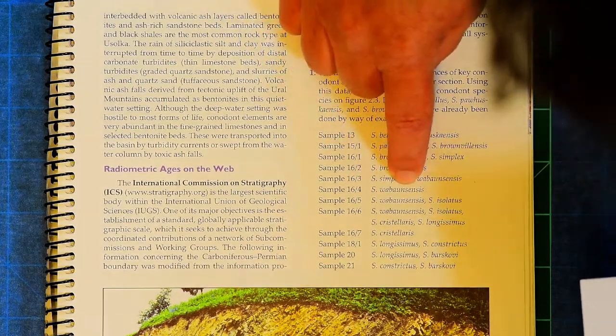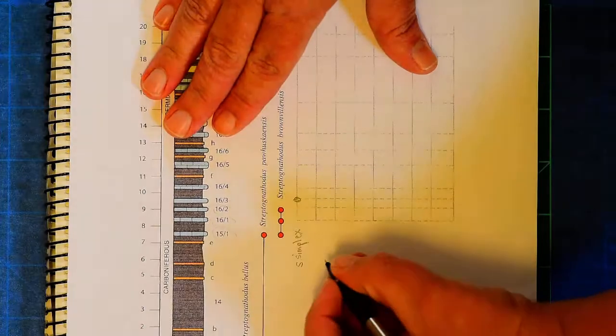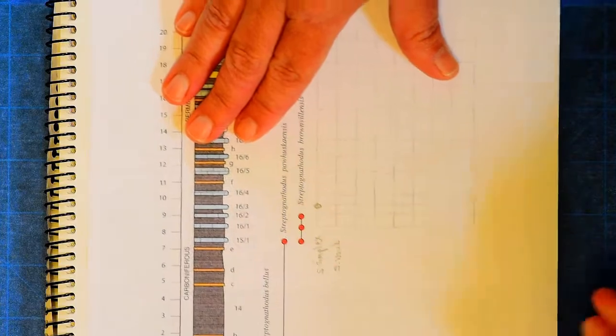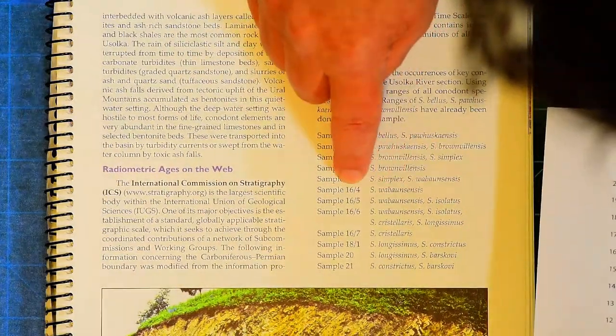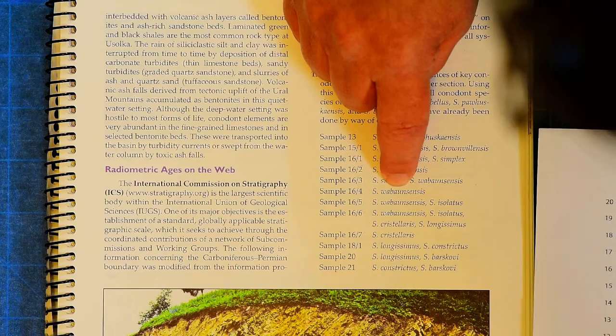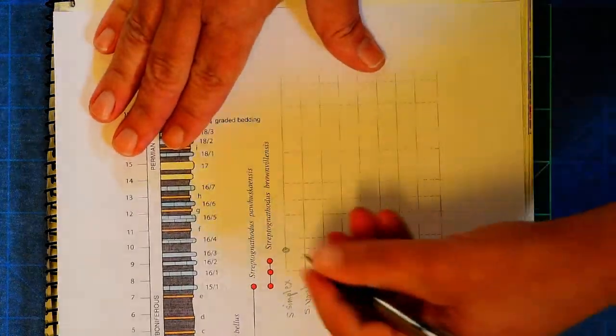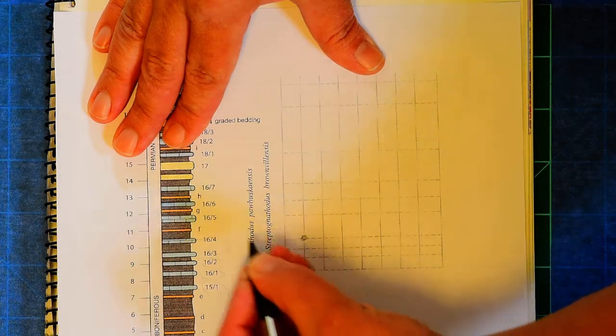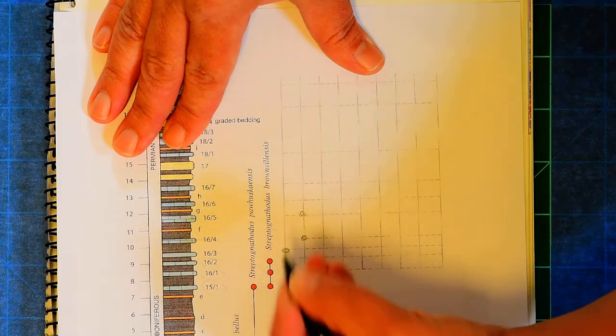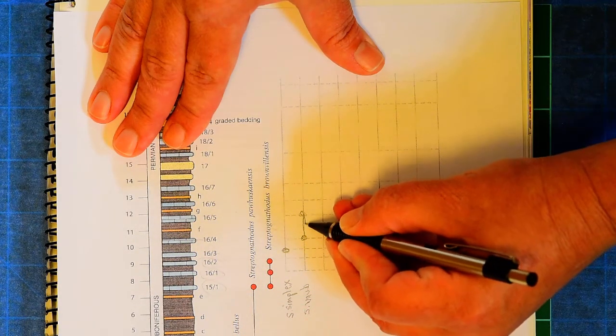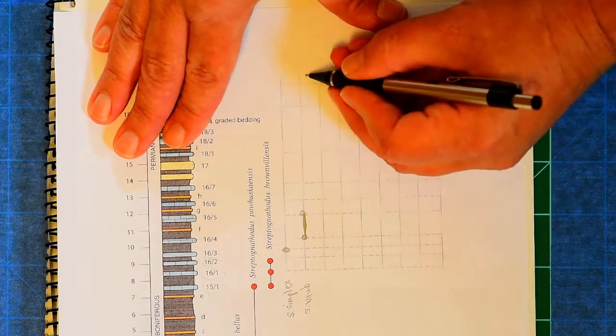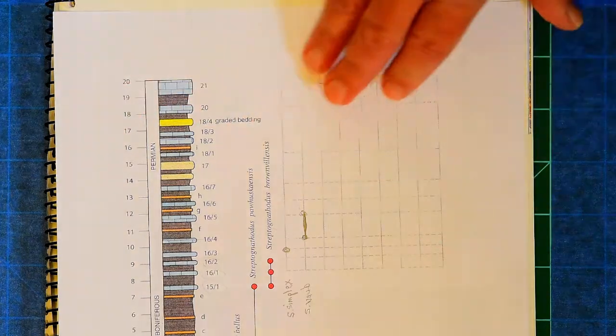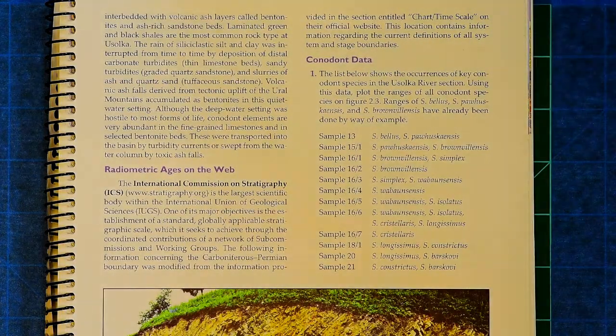Well, what about this S wabanensis? So I'm just going to write S wab for that. And this S wabanensis is found in 16.4. It's found in 16.5. So I'd be like, all right, there's rock unit 16.4. There's rock unit 16.5. So I know at least this conodont lived during these times. And then you'd continue to plot it for as many of these rock units as it's found in. So that's what you'll be doing for that particular question.